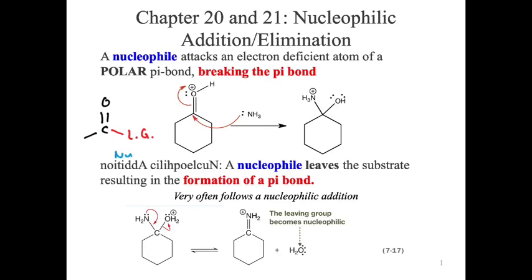When a nucleophile comes in and attacks, we'll still break the pi bond, but then the pi bond reforms and we kick out a leaving group. What I've written in that far left corner is a condensed mechanism showing two different steps. The end result is that you're doing what appears to be a substitution — nucleophile goes on, leaving group goes off.